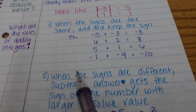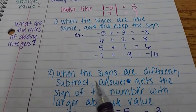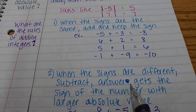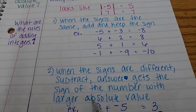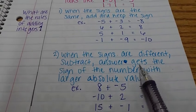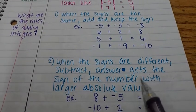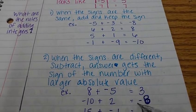Here's our second rule. When the signs are different, subtract. Answer gets the sign of the number with a larger absolute value. Now that's some new vocabulary that was just thrown at you. Let's talk about what that means with some examples.